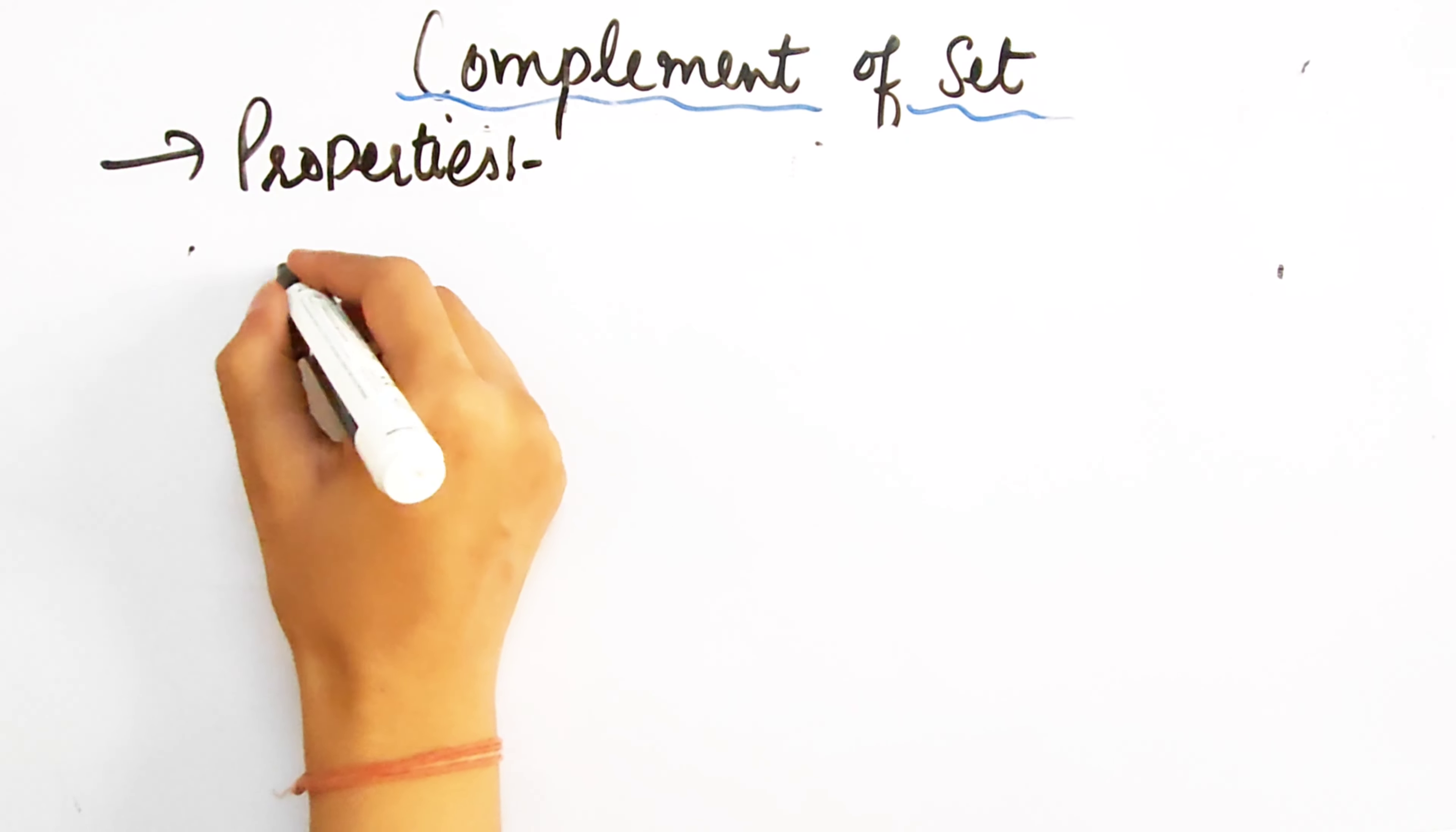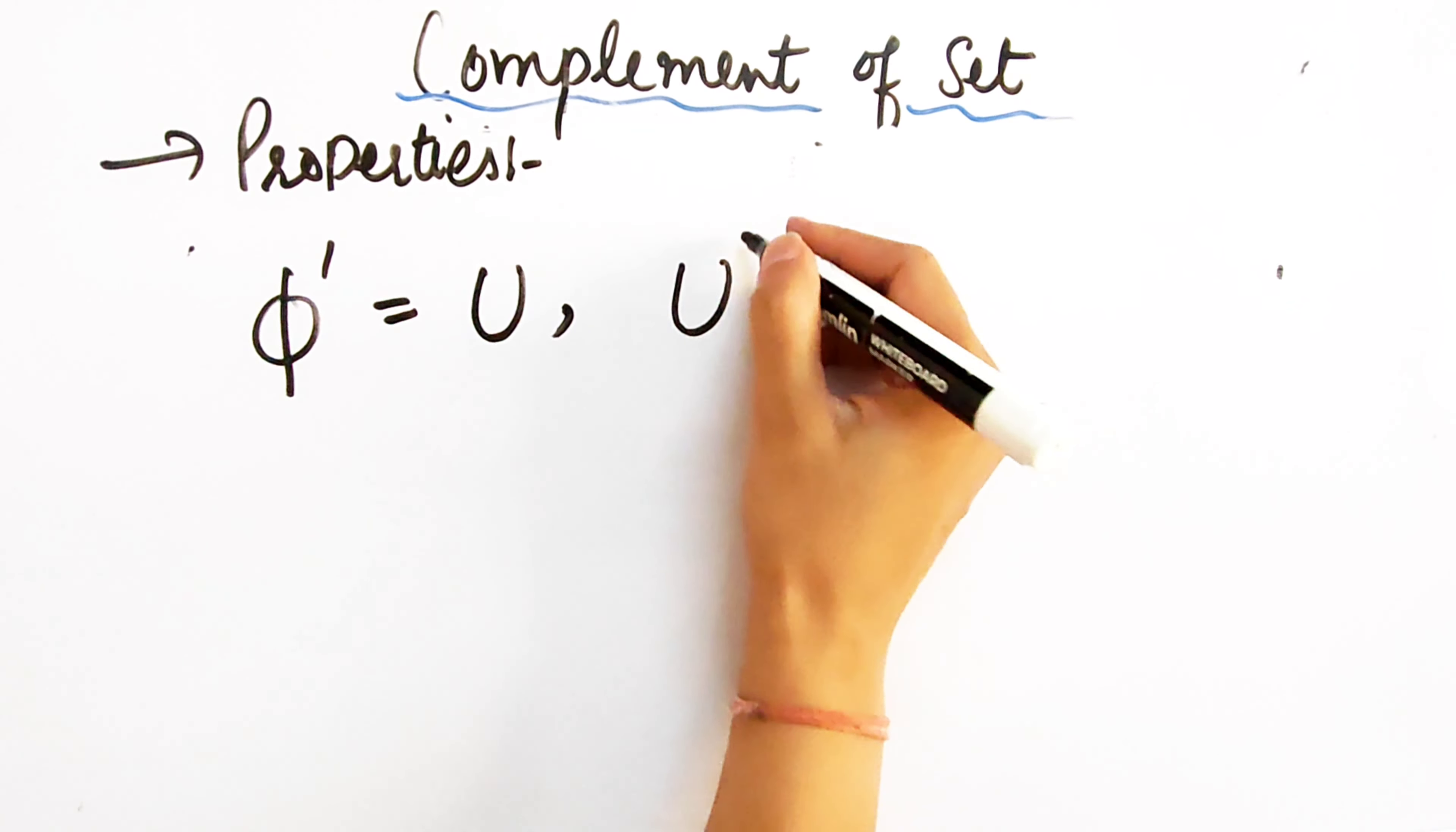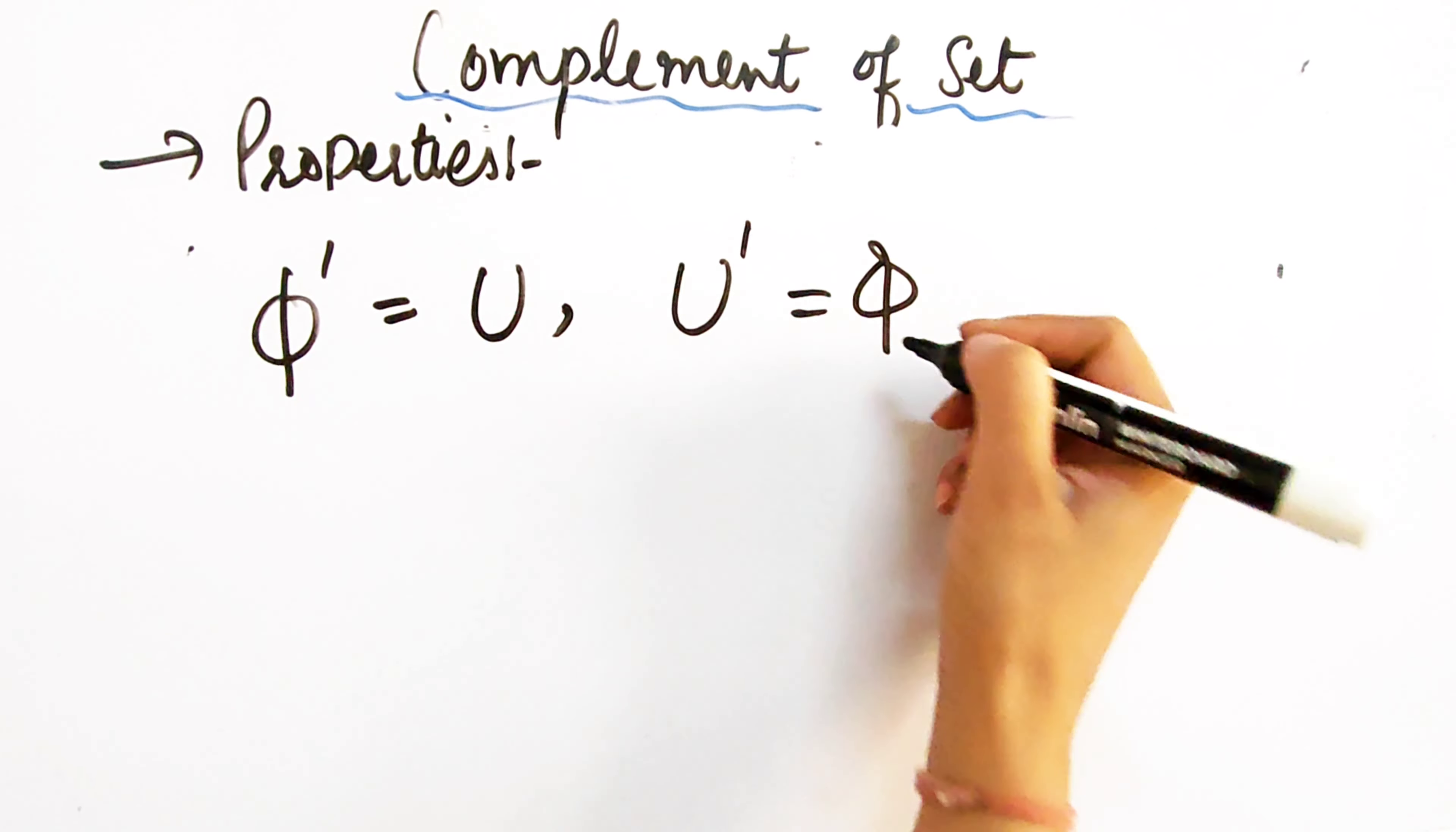The last property, if we remove the complement, then what will come back? Universal set. And if we remove the complement of universal set, then what will come back? Five, the empty set. What do they say? Law of empty set and universal set. I hope your definitions are clear. We will see you in the next video. Please do share this video with your friends and classmates. Take care, bye bye.